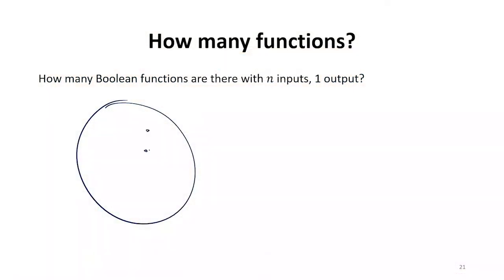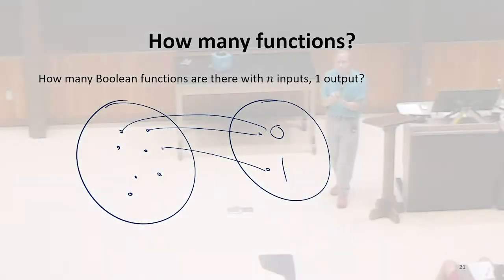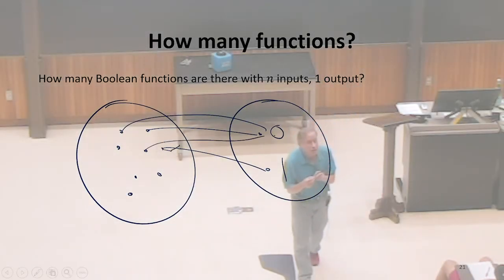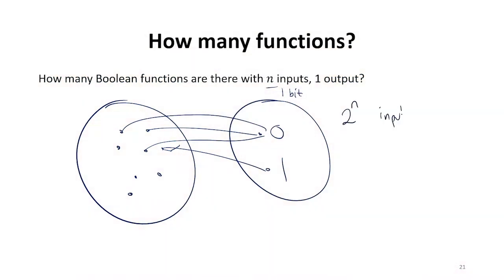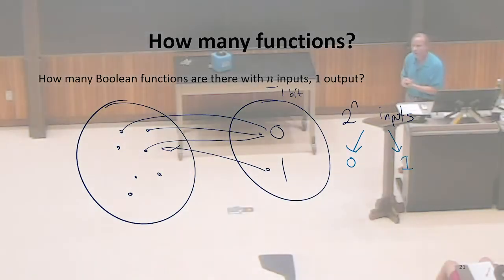So how many functions are there that take N inputs and map them to one output, where outputs are either zero or one? Functions are going to be mapping whatever inputs are to those outputs. So how many are there? Two to the N. Okay, so there are two to the N possible inputs. The function has N inputs. Each is one bit. There are two to the N inputs. And each one of those inputs, what does the function do? Because it's a function that has to map each one of those inputs to either zero or one.